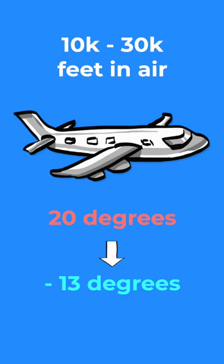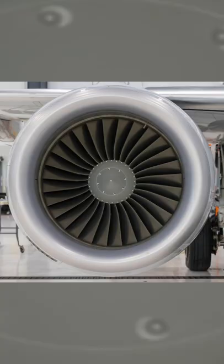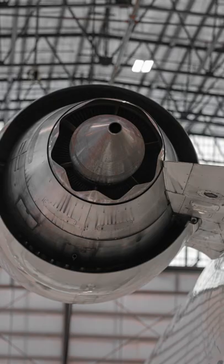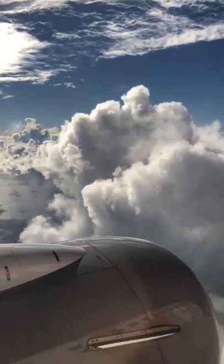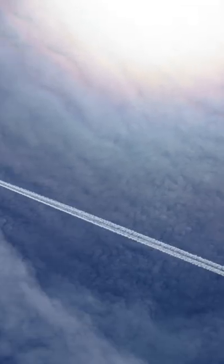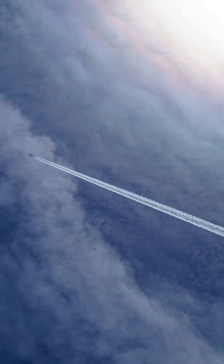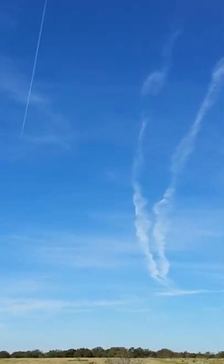These trails are caused by the hot exhaust gas from the engine condensing quickly in the air, and even freezing depending on how cold it is. This in turn creates the familiar cloud trail that we see in the sky while aircrafts are flying. The reason these trails are so long is because of how hot the exhaust gas is, thus leaving a longer trail.